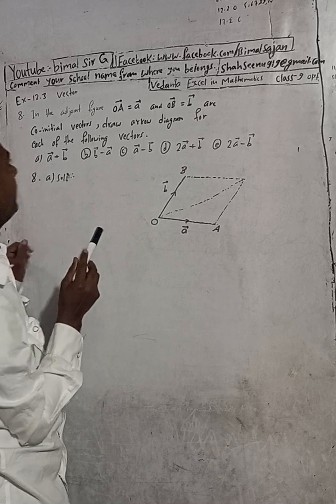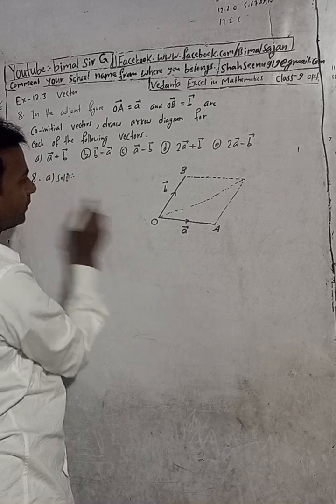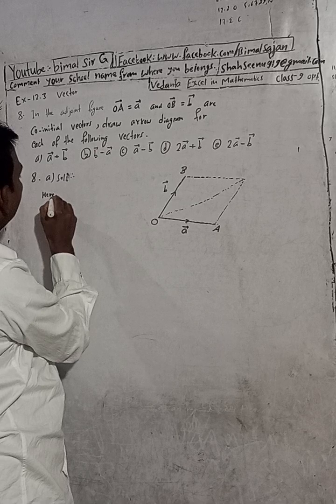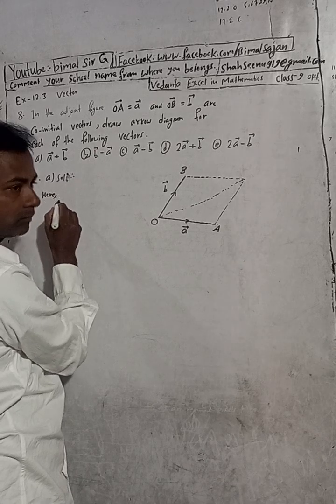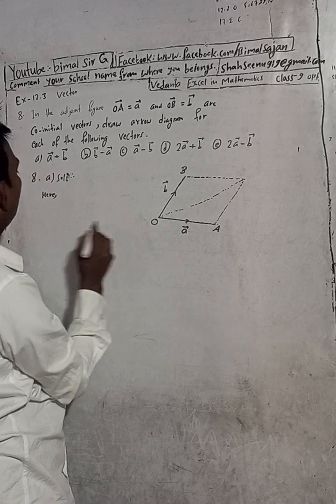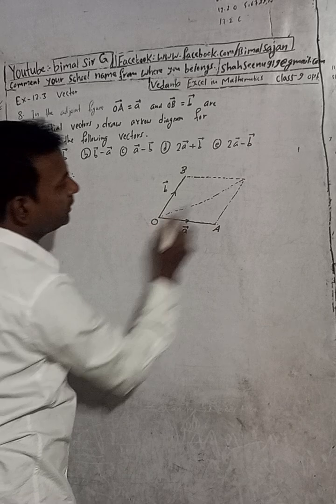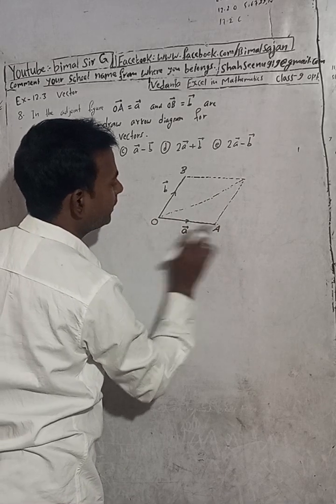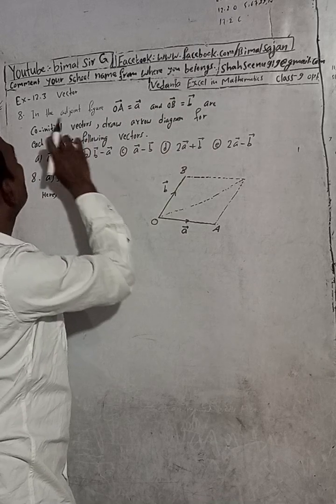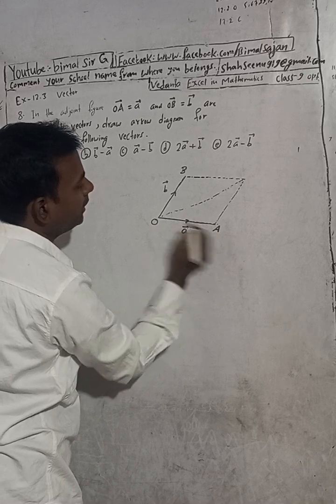Now our target is to show A plus B vector. First of all, I can complete this diagram. You know OA vector is A vector, OB vector is B vector. OA and OB vectors are co-initial, meaning they share the same initial point O.